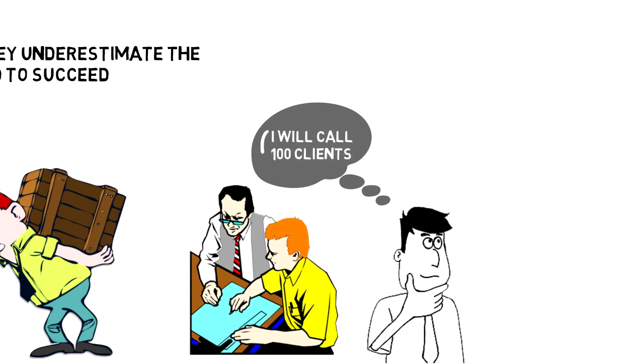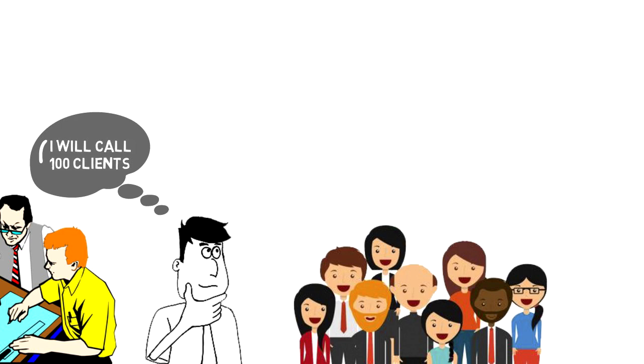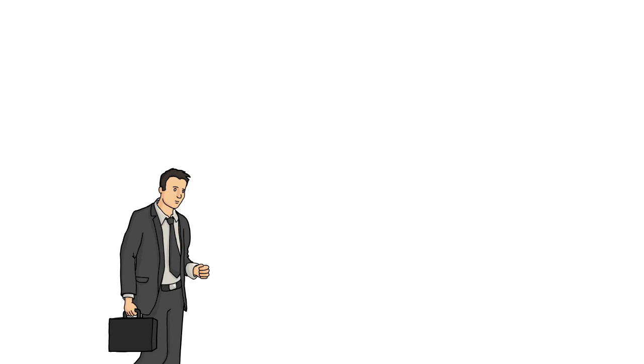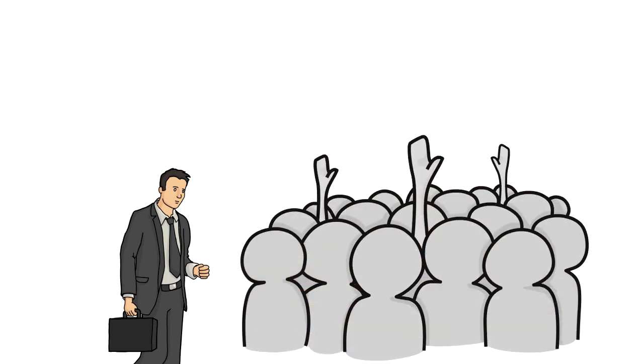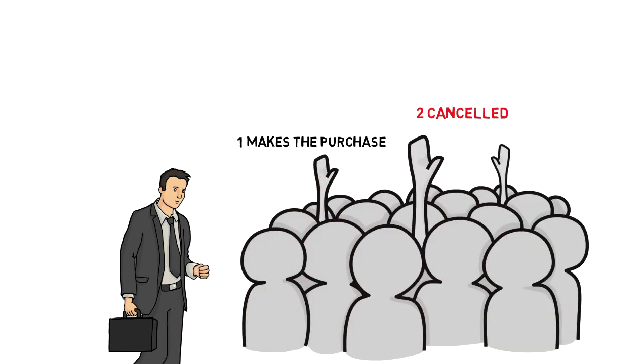I will call 100 clients, 20 of them will agree to meet with me and five of them will buy my product. That is how it might work in your mind but in reality it is different. You will call 100 clients, you'll probably get to talk to 50 of them. You'll arrange five meetings of which two will get cancelled, two clients will not be interested in your product and one will make the purchase. That is how it will work in the real life.